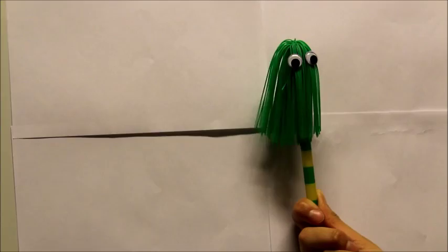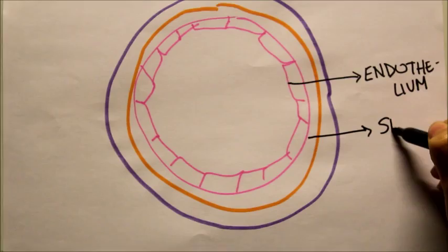Hi everybody! Today we are going to talk about vessels. Everybody knows that the vessels consist of the endothelium, smooth muscle and tunica externa.